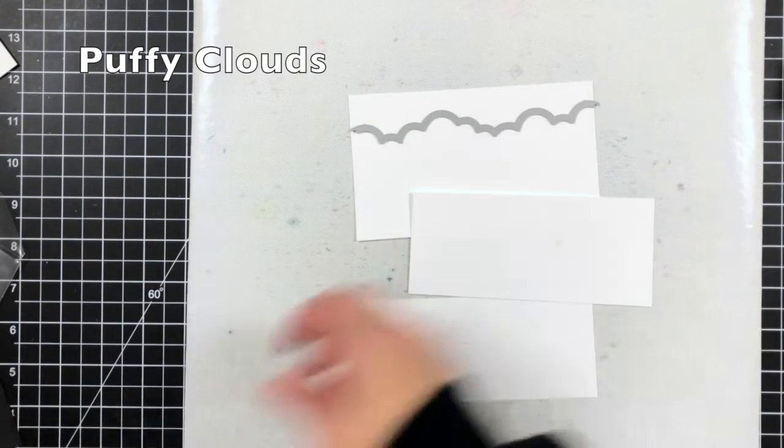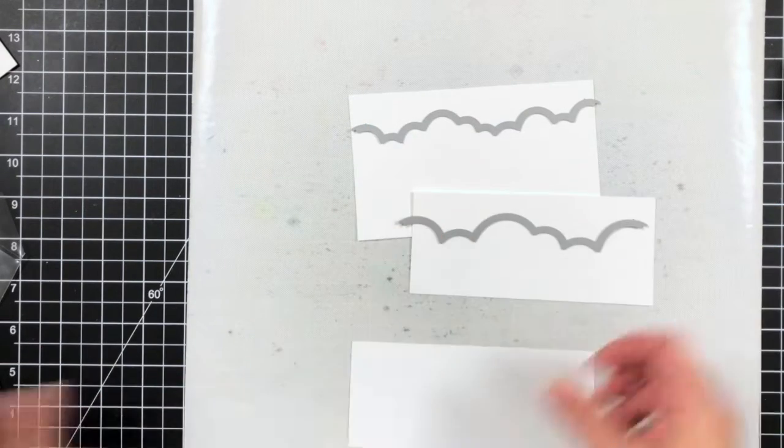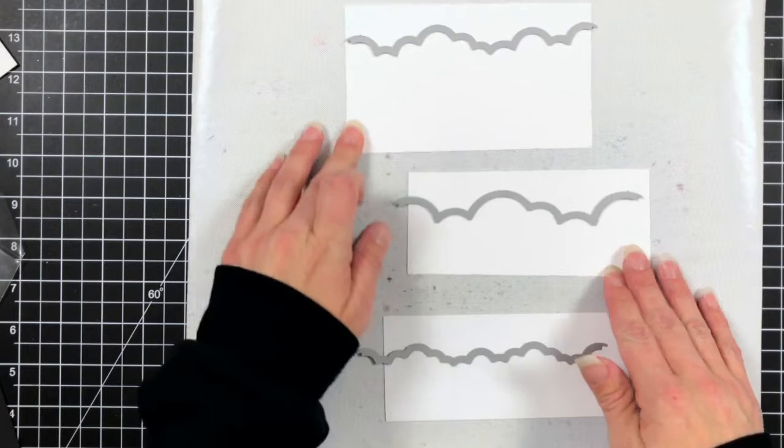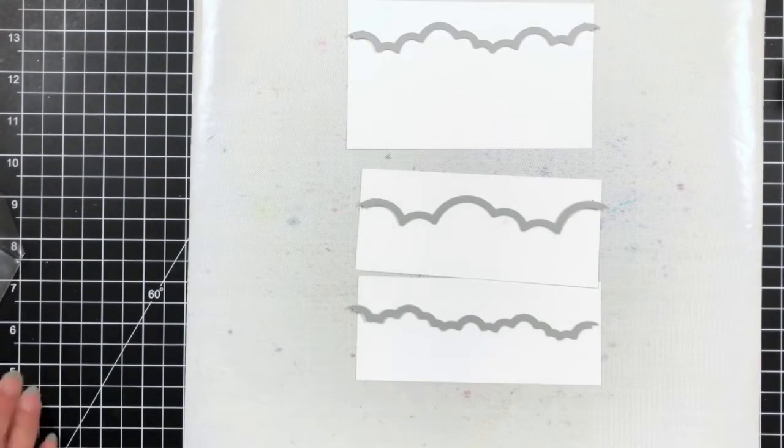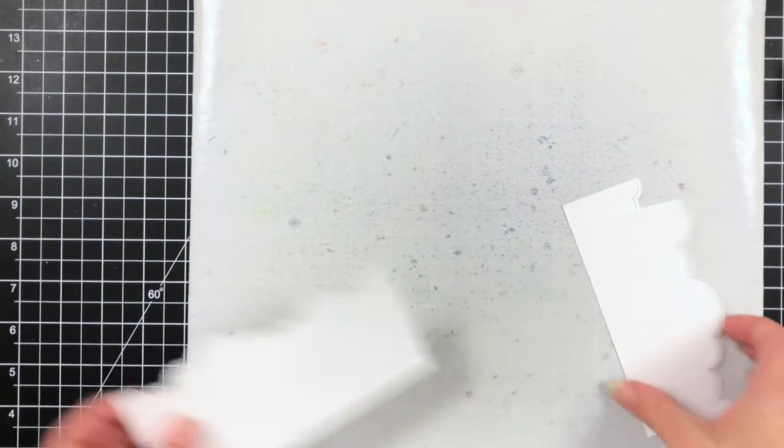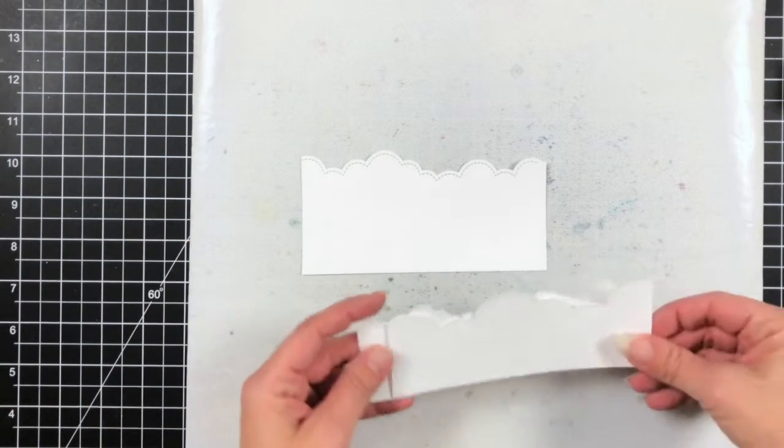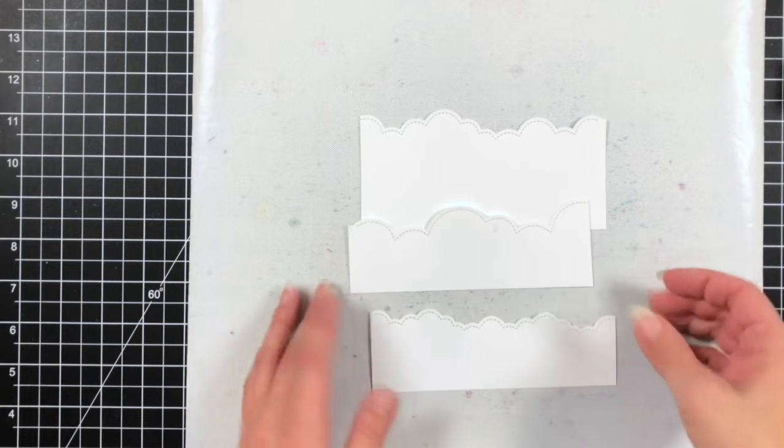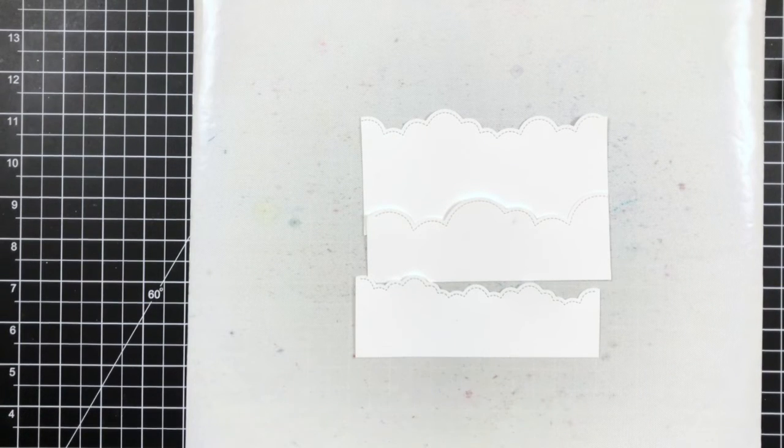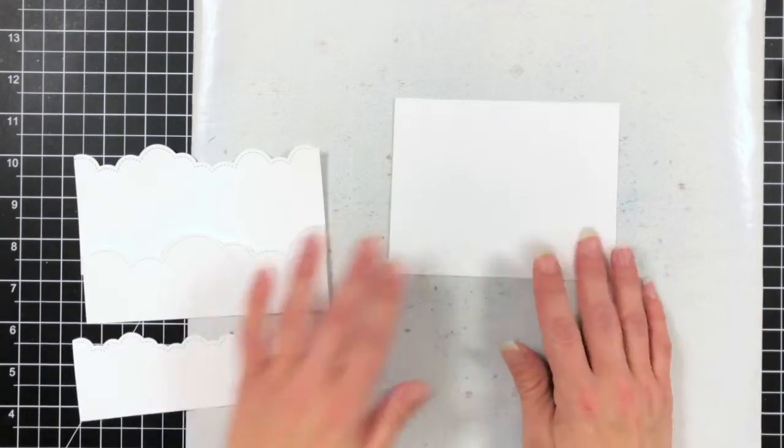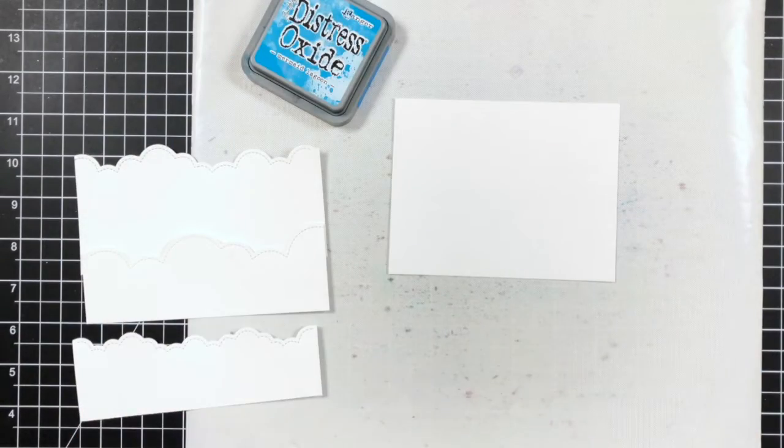The next thing I'm going to do is create my own stencil and I'm using white cardstock with the puffy clouds die and I'm using all three of those different shapes. So once I run those through my die cut machine I'll have my stencil ready to go. You can do this out of cardstock, you can do this out of acetate, whatever works for you. Depending what colors you use you could save these and reuse them.